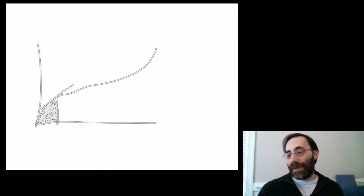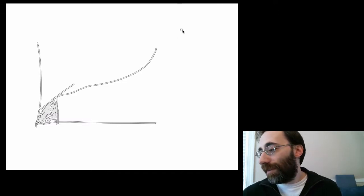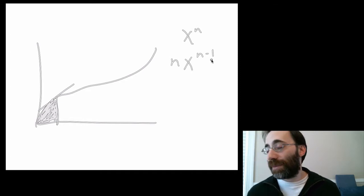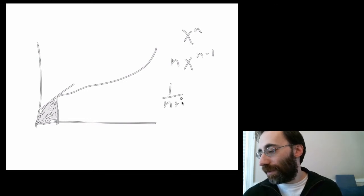So, the derivative of x to the n was n times x to the n minus 1. The integral of that same function is 1 over n plus 1 times x to the n plus 1.